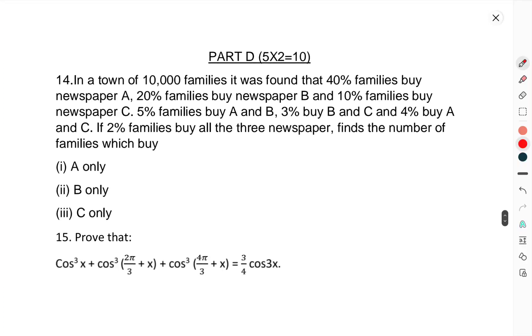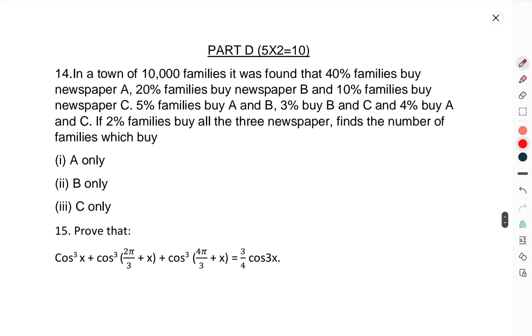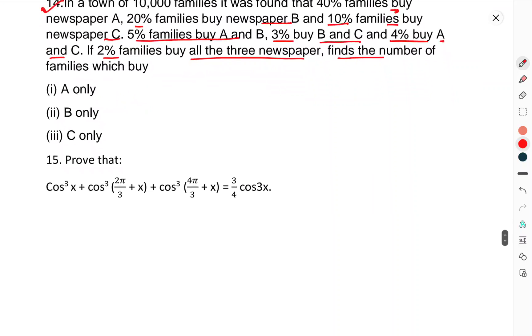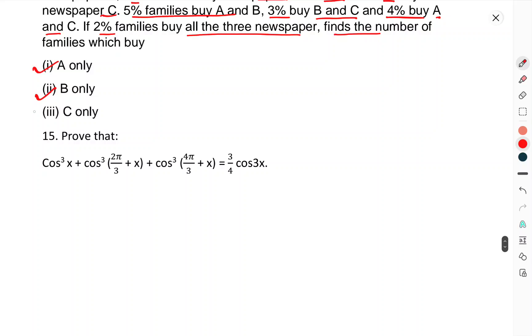Part D contains two questions having 5 marks each. Question 14: In a town of 100 families, it was found that 40 families buy newspaper A, 20 families buy newspaper B, and 10 families buy newspaper C. 5 families buy A and B, 3 families buy B and C, 4 families buy A and C, and 2 families buy all three newspapers. Find the number of families which buy only A, only B, and only C.